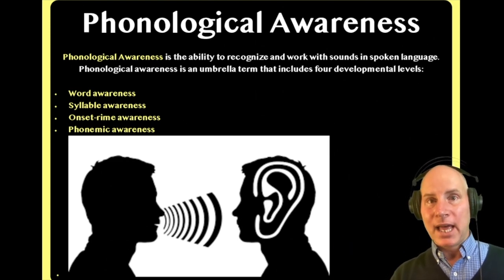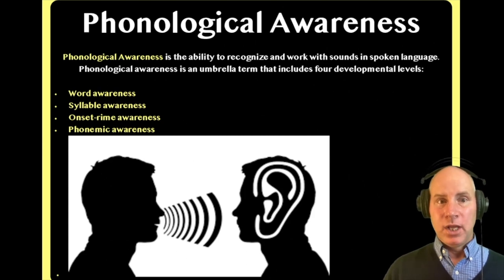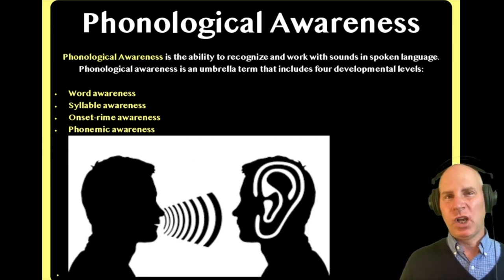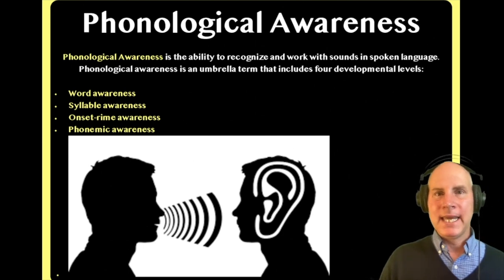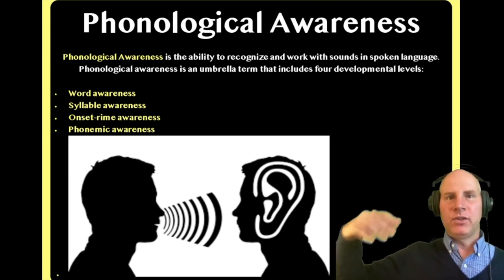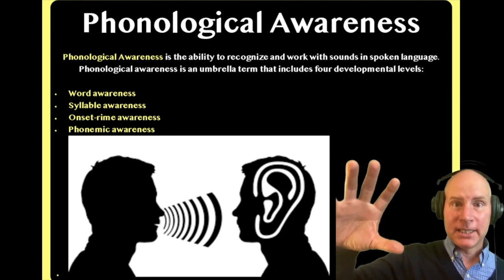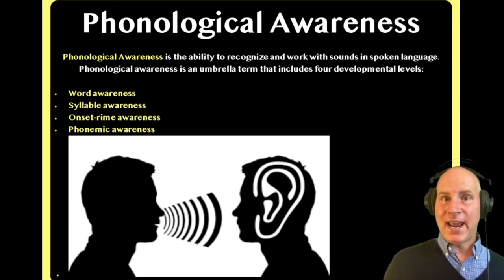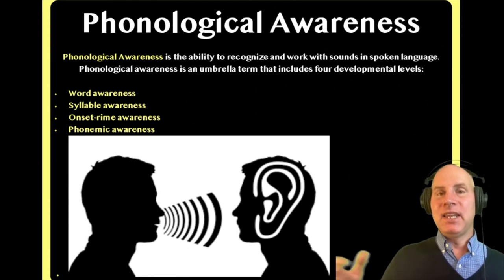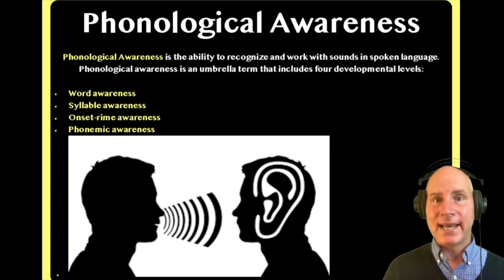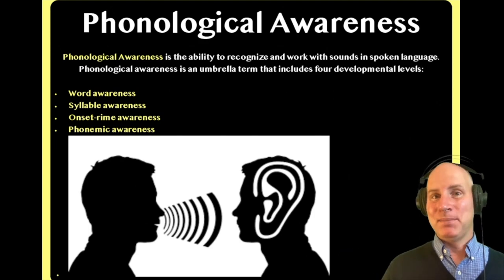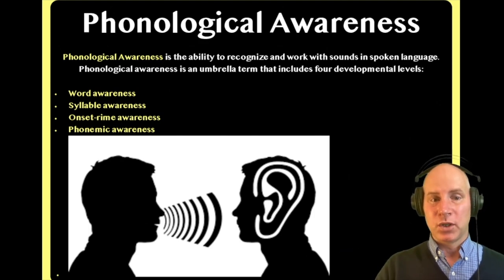The four levels are: the word level, the syllable level, the onset and rhyme level, and the phonemic awareness level. The word level and syllable level are the most basic. Onset and rhyme is a little more advanced — upper intermediate. And phonemic awareness is definitely the most advanced, involving hearing, identifying, and manipulating individual sounds in words.